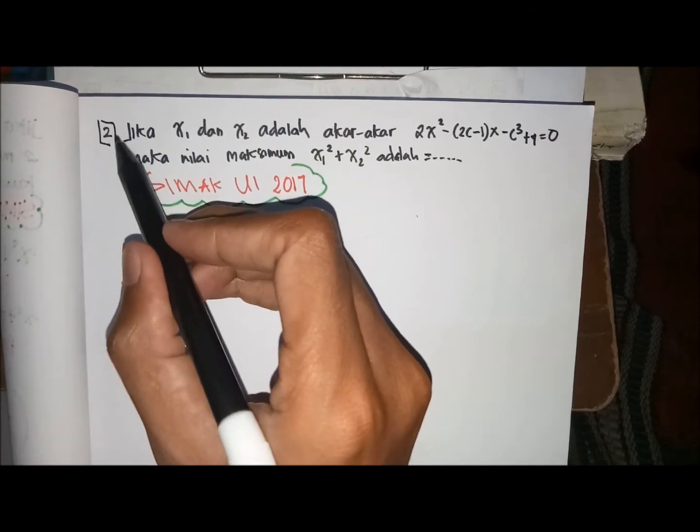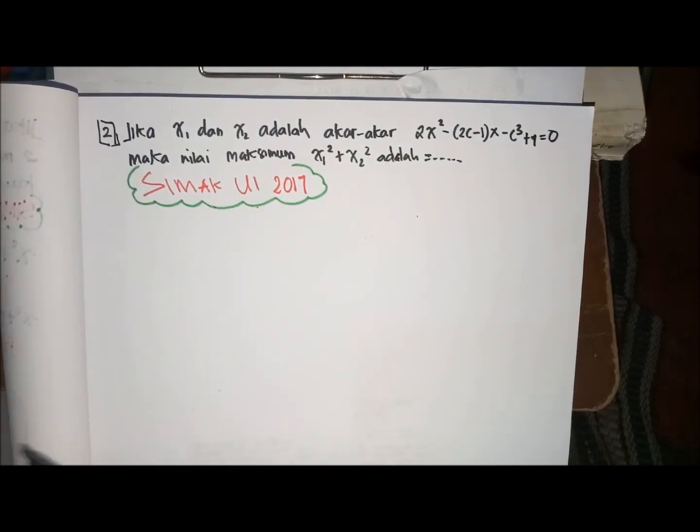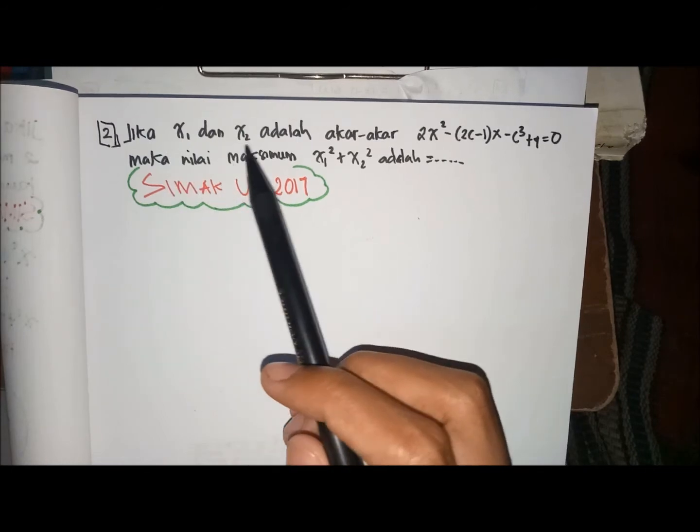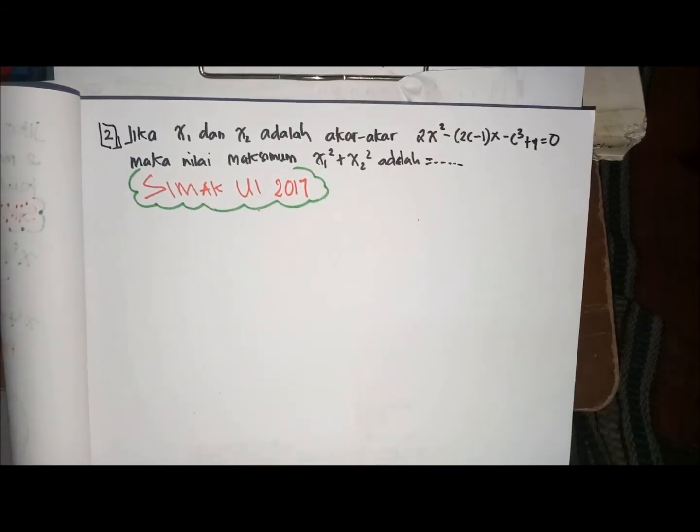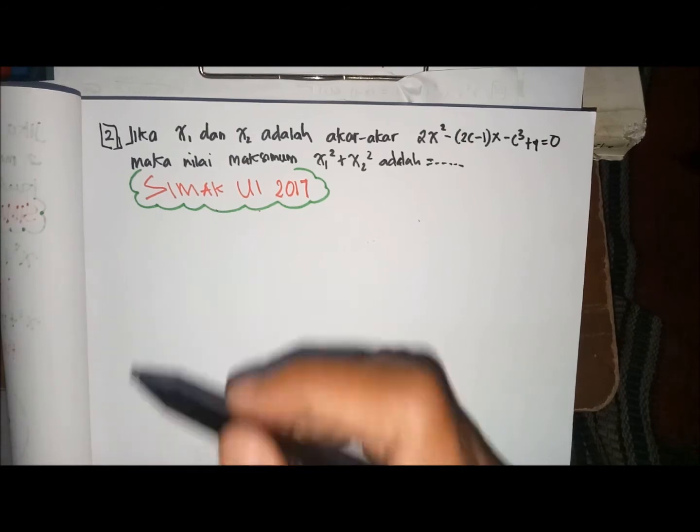Jika X1 dan X2 adalah akar-akar 2X kuadrat min 2X min 1 X min C bangka 3 plus 4 sama dengan 0, maka nilai maksimum dari X1 kuadrat plus X2 kuadrat. Langkah pertama,